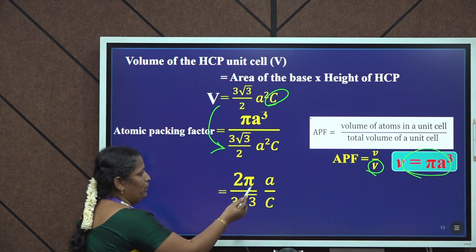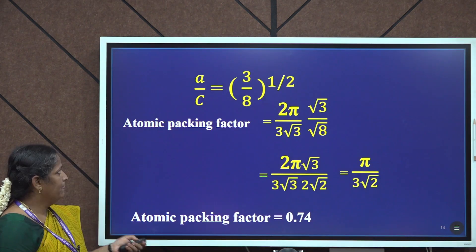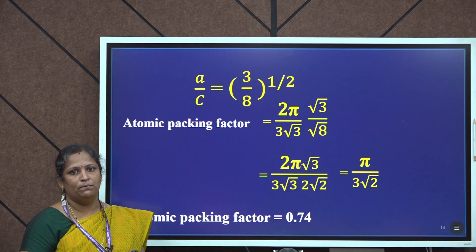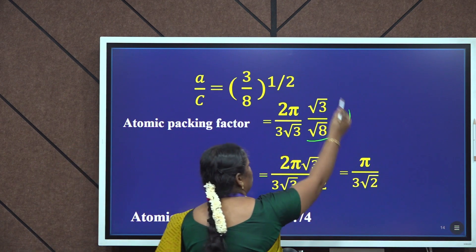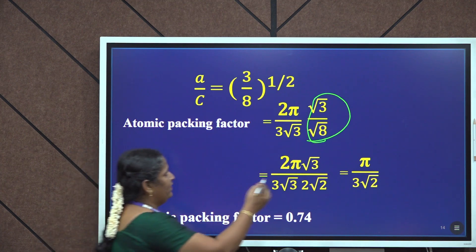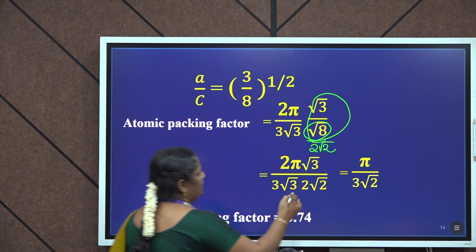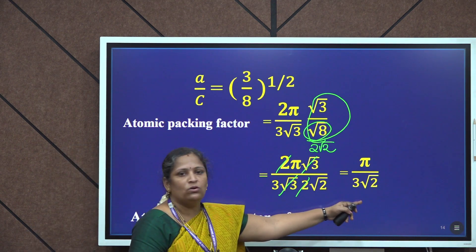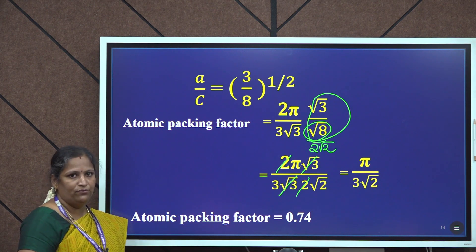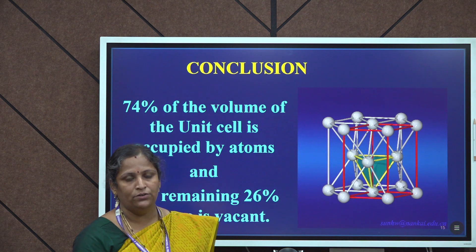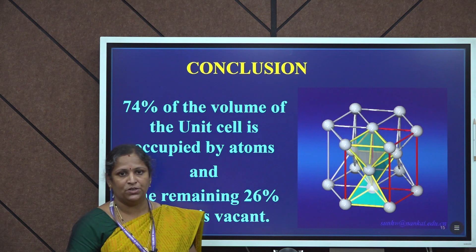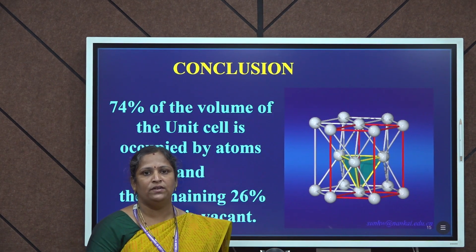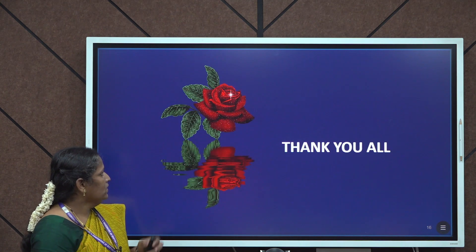We have the expression 2π / (3√3) × (A/C), and we substitute A/C = √(3/8) = √3 / (2√2). Simplifying, √8 = 2√2, and cancelling common factors, we arrive at the atomic packing factor as π/(3√2), which equals 0.74. In conclusion, the atomic packing factor of the HCP structure is 0.74, meaning 74% of the unit cell is occupied by atoms and the remaining 26% is left vacant. Thank you.